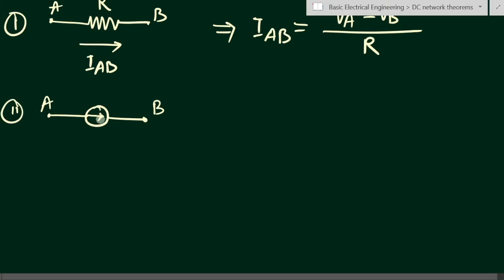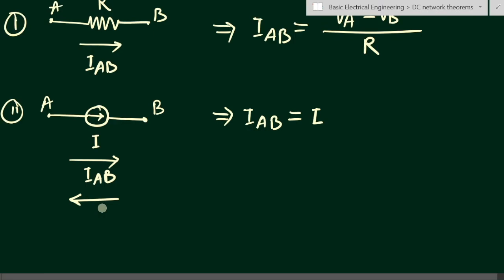In the second case, if we have an ideal current source with output current I and no internal resistance, the current Iab equals I if the assumed direction matches. If Iab is considered in the opposite direction, then Iab equals minus I. The negative sign is applied because the direction is opposite.